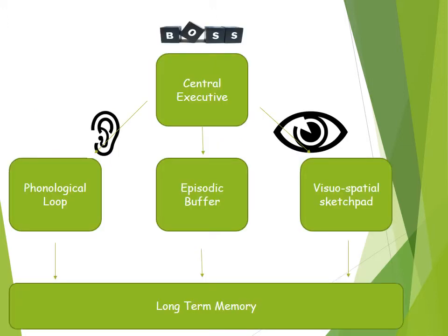Looking at the diagram of the model, you can see how the four components are related to one another and how they link to long-term memory. The central executive is the most important component of the model — like a central executive of a company, it is the one that is in charge. It is responsible for allocating the information to the different subsystems or slave systems: the phonological loop, episodic buffer, and the visuospatial sketchpad. However, not much is really known about how it functions and it is relatively limited in its own capacity.